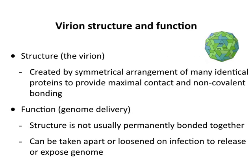When we think about the virus particle, we have two things to consider: the structure — how it's built — and what it has to do. The structure has a key pattern: it's created by a symmetrical arrangement of identical proteins to provide maximal contact and non-covalent binding. This is one of the principles of virus structure. You take one or a few proteins, repeat them many times to make a virus particle, and you want those proteins to interact maximally so the particle will be stable. You don't want them to be covalently bonded together, otherwise the particle could never come apart — it has to be metastable.